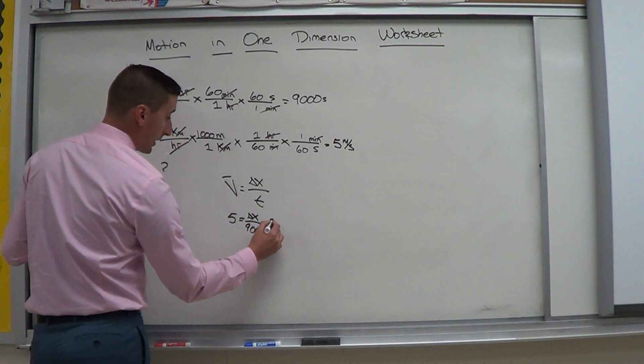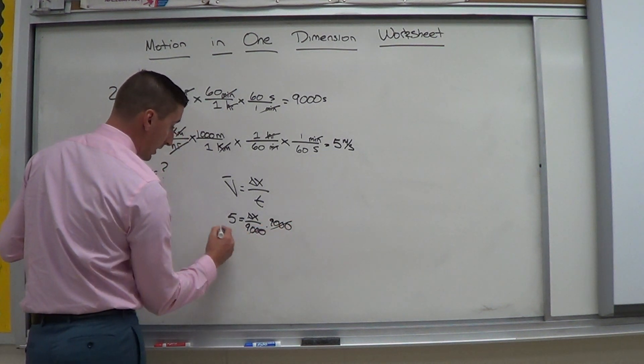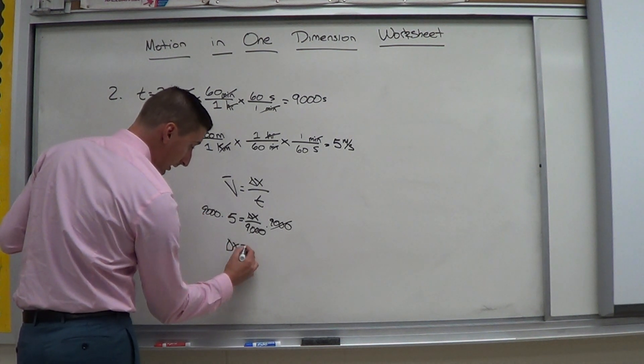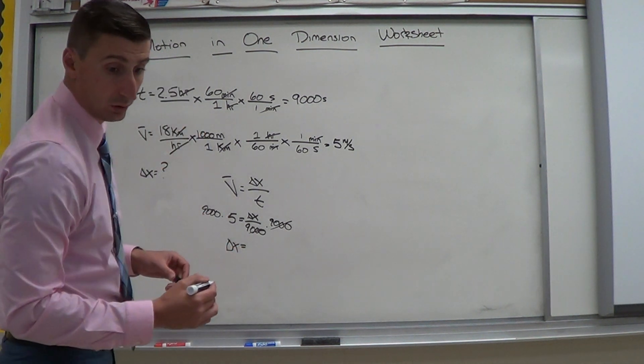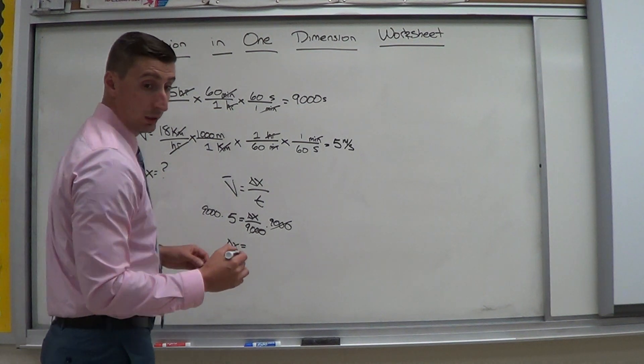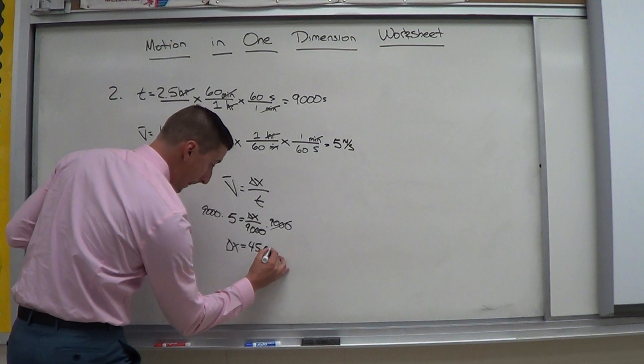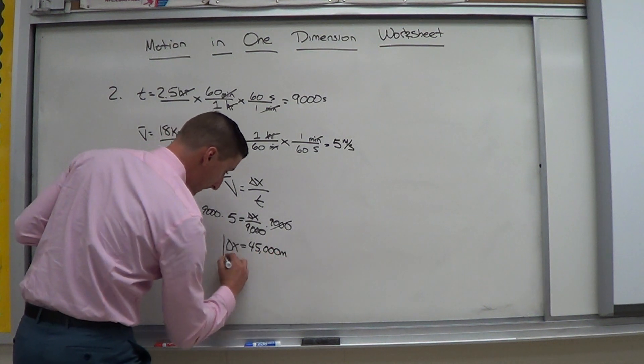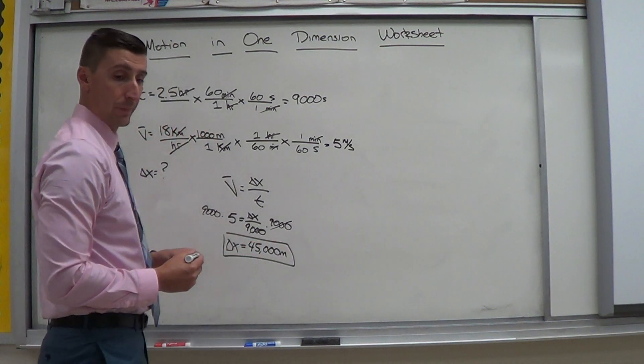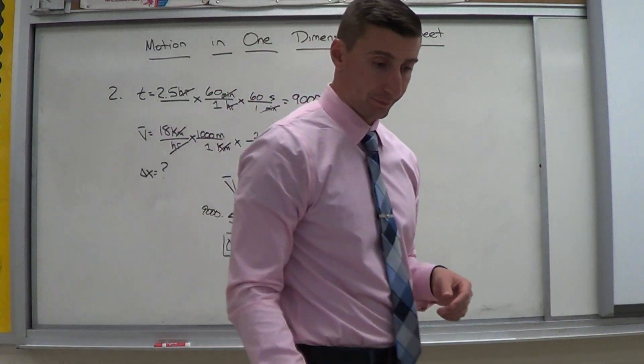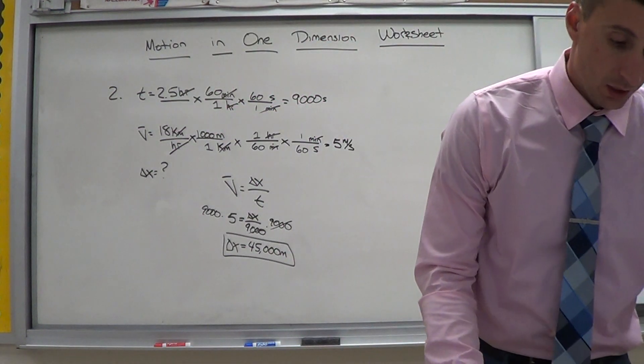To solve, I multiply by 9,000. Cancels out. 9,000. I get delta x is equal to 45,000 meters. Alright?